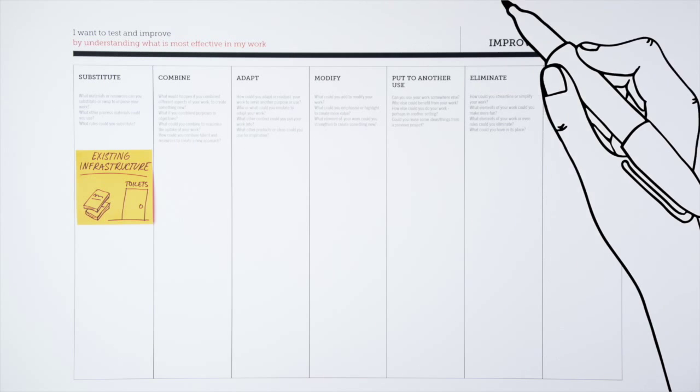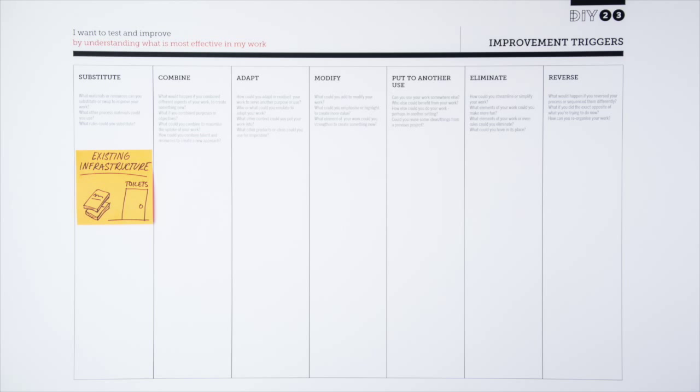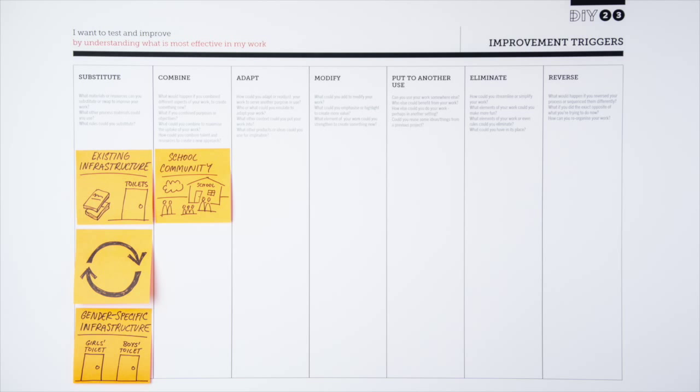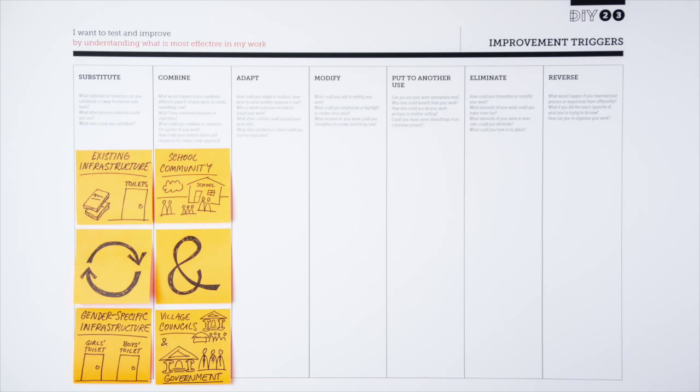They think of current priorities within the education system and replace them with what they think is more important. They try to combine services that might not work together at the moment. They tweak certain school routines to meet the needs of girls.